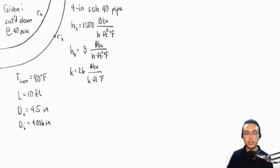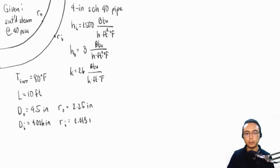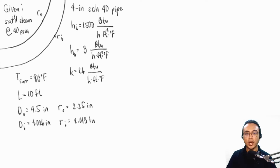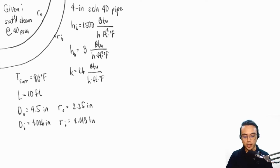From the given values of the actual inside and outside diameter, we can determine the outside and inside radius as 2.25 inches and 2.013 inches respectively. Next, we look at temperatures. We are given the surrounding temperature outside the pipe as 80 degrees Fahrenheit. However, we were not given the temperature inside the pipe — only that it contains saturated steam at 40 PSIA. Since this is saturated steam, we can use the steam table to convert saturation pressure to saturation temperature. Let's first convert PSIA to megapascals.